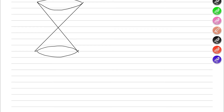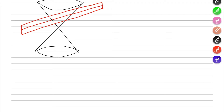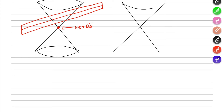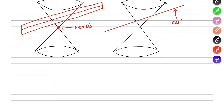So this is a cone, and this is a plane. The plane is intersecting with the cone, but the plane does not pass through the vertex of the cone. So if I illustrate something like this — this is a cone and the cutting plane is like this — this is the cutting plane.